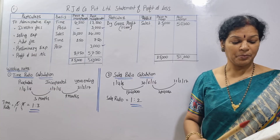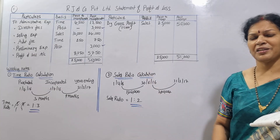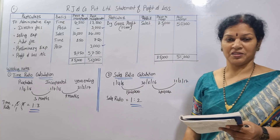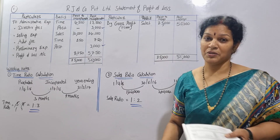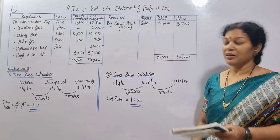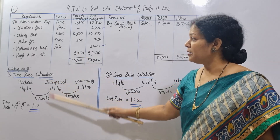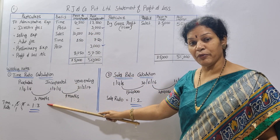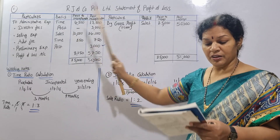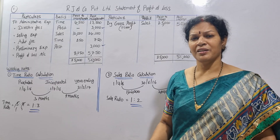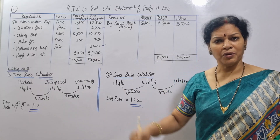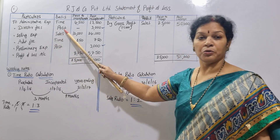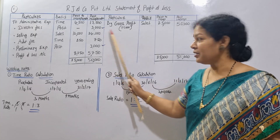Now we allocate expenses. Administrative expenses of 18,000 are on time basis (1:3): 18,000 × 1/4 = 4,500 for pre; 18,000 × 3/4 = 13,500 for post. Director fee is company-related and posted entirely to the post-incorporation period.